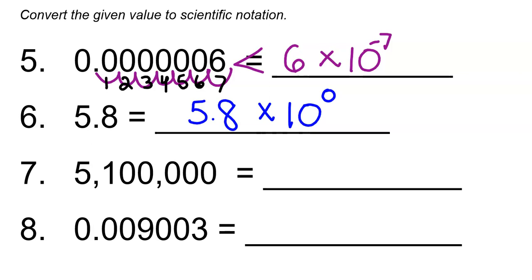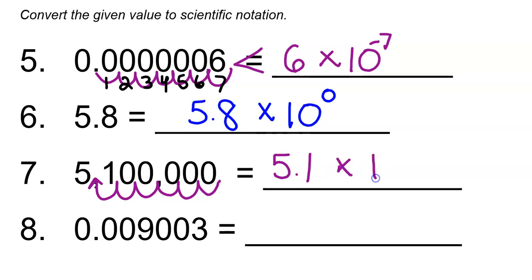Number 7: we have 5,100,000 — a big number. Those commas are not decimal points, so we place the decimal point at the end and move it until we get a number between 1 and 10. We get 5.1 as our number between 1 and 10, times 10 to some power. We moved the decimal point 1, 2, 3, 4, 5, 6 times — so times 10 to the 6th power. Our original number is much bigger than 5.1, so the exponent stays positive: 5.1 times 10 to the 6th.